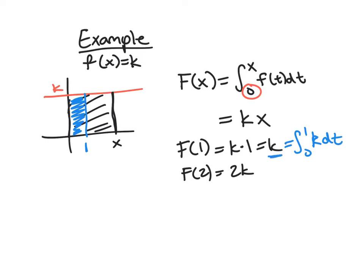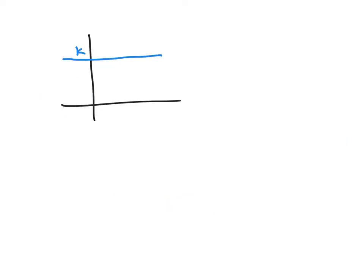The point is that once you find a general formula by computing the area geometrically, you can treat this as any function and plug in values for x. Something we'll always see: notice the connection between big F and little f. Big F is kx and little f is k, so big F is an antiderivative of little f. This area function will always be an antiderivative of the function you're taking the area under.